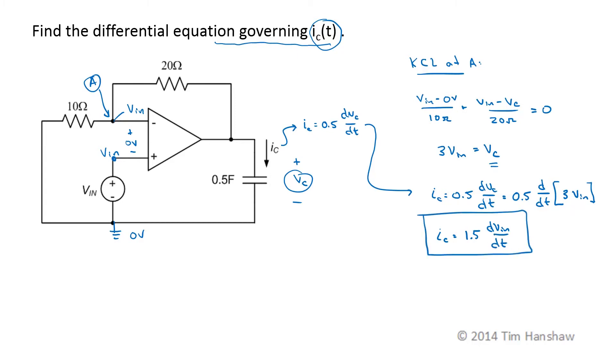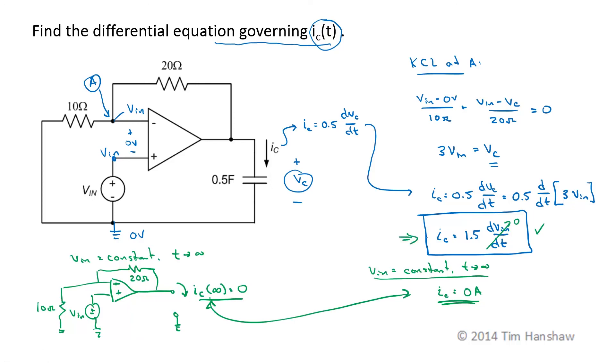Now this isn't required by the problem statement, but I'd kind of like to check to see if this equation is right. So let's say VN is a constant and let T go to infinity. Well, if VN is a constant, DVN DT is zero. So under this case, I sub C is going to be zero amps. In the original circuit, if VN is a constant and I let T go to infinity, and as T goes to infinity, if everything is constant, my capacitor is going to look like an open circuit. So if the capacitor looks like an open circuit, I sub C will be zero, and that's perfectly consistent with what I got over here, so I can feel pretty good about this differential equation.